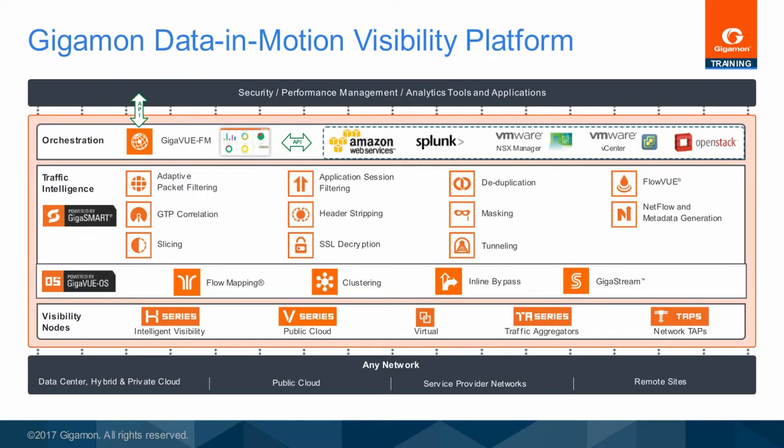The Gigamon Data in Motion Visibility Platforms provide pervasive visibility across physical, virtual, remote sites, and future SDN-NFV production networks. Development is always busy with new modules and technologies to address present and future needs as your network grows and evolves.